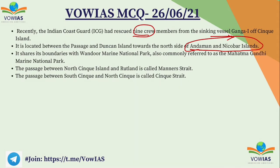Scenic Island shares its boundaries with the Wandoor Marine National Park, commonly referred to as the Mahatma Gandhi Marine National Park. The passage between North Scenic Island and Rutland is the Manor Strait, and the passage between South Scenic and North Scenic is Scenic Strait. The most important thing to remember is the location of Scenic Island near the Andaman and Nicobar Sea.